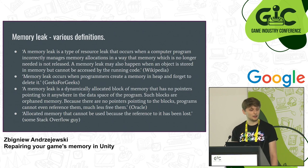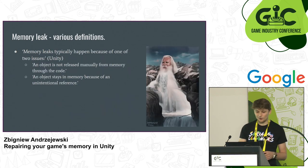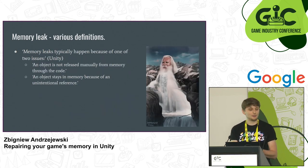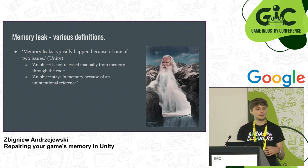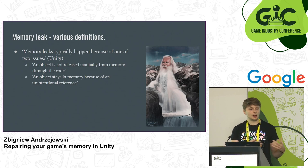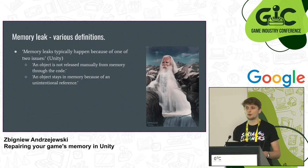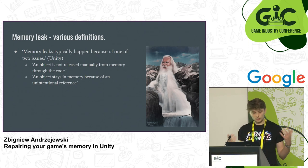Another definition: allocated memory that cannot be used because the reference to it has been lost. That's not enough actually. I also found a definition on the Unity page about reasons for memory leaks. They say memory leak happens because of one of two issues: an object is not released manually from memory in code — which fits native objects you create from code — or an object stays in memory because of an unintentional reference. That's actually true.